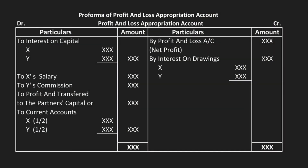Welcome back to the series on accountancy, Chapter 2: Accounting for the Partnership. In this video, we will look at the format of the Profit and Loss Appropriation Account. We will go to the conclusion at the bottom of the year on what the Profit and Loss Appropriation Account is and what it does — it is used to distribute profit.